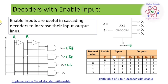Here is a truth table corresponding to a 2-to-4 decoder with the outputs marked as d0 to d3 and inputs A and B. In this schematic we have an enable input for an active high device, meaning when the enable is equal to 1 the output will be high. When the enable is equal to 0, irrespective of the input given, the output will be all 0s.